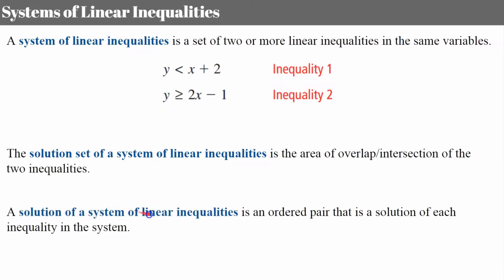A solution of a system is an ordered pair that's in the solution set — an ordered pair that makes both inequalities a true statement. If the ordered pair is only true for inequality one, it's not part of the solution set. It must make it true for inequality one and two, and if you have multiple inequalities, for all of them.